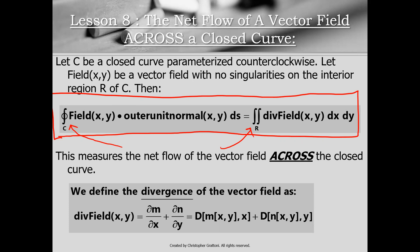Then we lifted this up to three-dimensional space for lesson 12, essentially by adding an extra integral symbol to both sides. That's an oversimplification, but in a sense, the divergence theorem is a direct analog of the Gauss-Green theorem. It's just that our path integral becomes a surface integral, and our double integral of the divergence becomes the triple integral of the divergence.